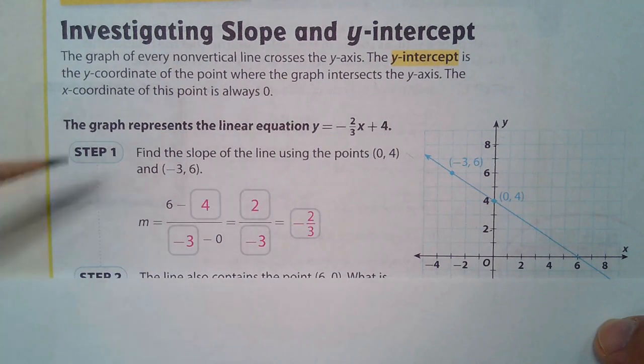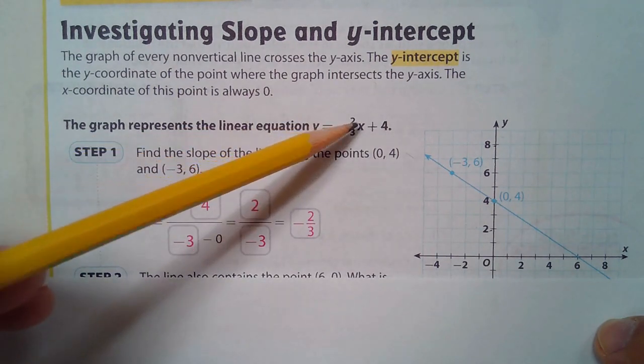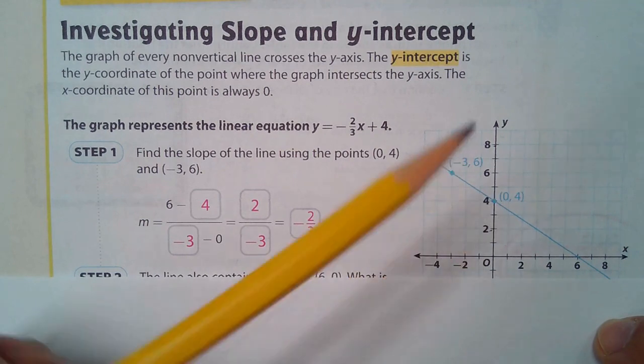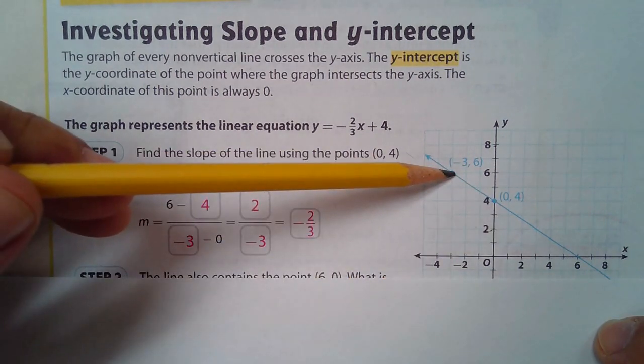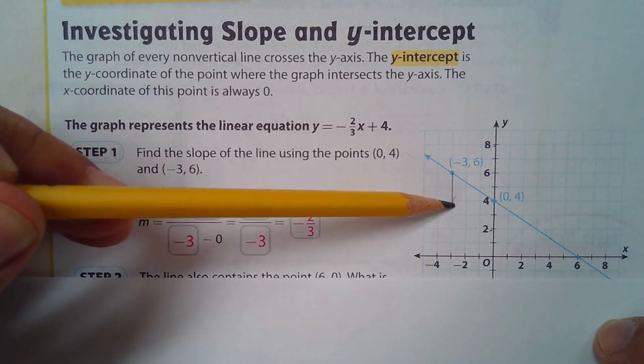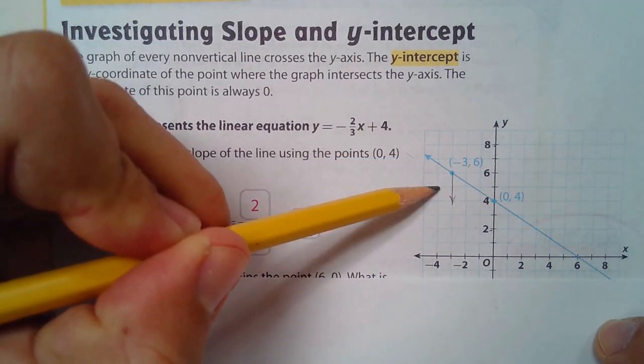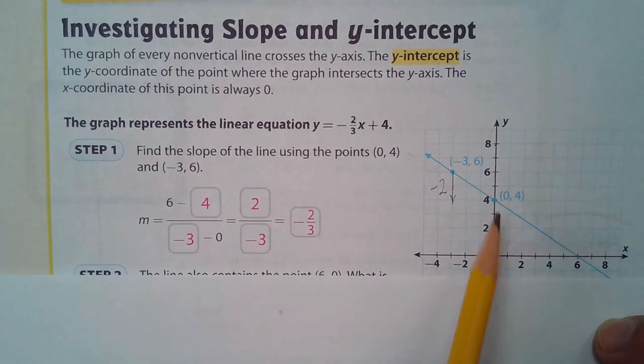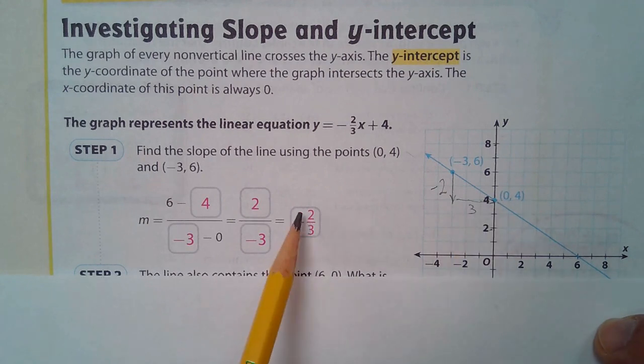We have the graph representing the linear equation negative two-thirds x plus four. Find the slope of the line. The slope is the rise over the run. We can see that the rise here is negative, it goes down from left to right. How far do you go straight down? It looks like we go straight down two, and I represent that as negative two. And the run is how far do we go straight to the side? We go to the straight side one, two, three. Negative two-thirds.